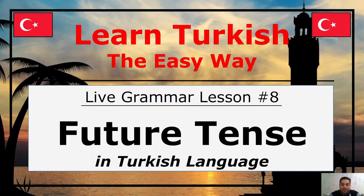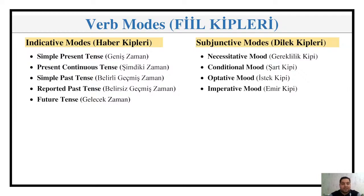We have already covered multiple tenses so far, as you probably follow from the previous classes. We basically have five tenses in Turkish language. So far we already covered simple present tense, present continuous tense, simple past tense, reported past tense. And now today we will cover the last tense, which is future tense. After which we will start with our moods — four moods that are relevant to Turkish language apart from the tenses. Starting from the next live grammar class, we will continue with the moods, starting with the necessitative mood.